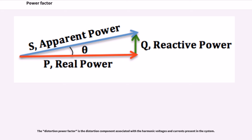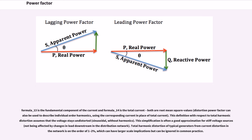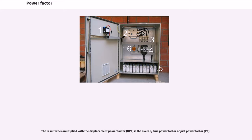The distortion power factor is the distortion component associated with the harmonic voltages and currents present in the system. THD is the total harmonic distortion of the load current. The fundamental component of the current and the total current are both root mean square values. This definition with respect to total harmonic distortion assumes that the voltage stays undistorted, which is often a good approximation for stiff voltage sources. Total harmonic distortion of typical generators from current distortion in the network is on the order of 1–2%, which can have larger scale implications but can be ignored in common practice. The result when multiplied with a displacement power factor is the overall true power factor.